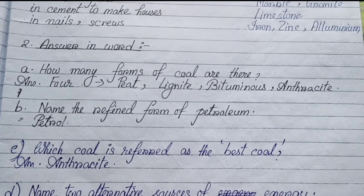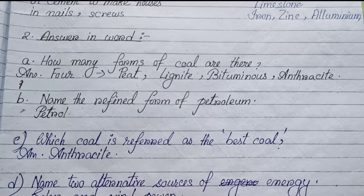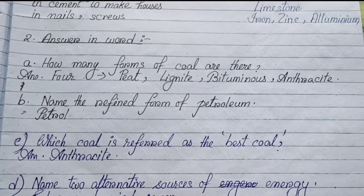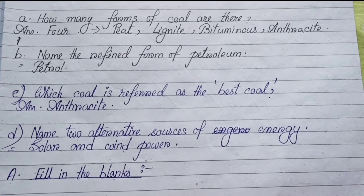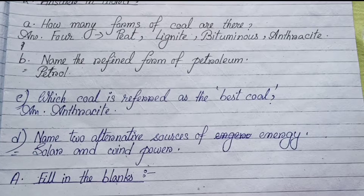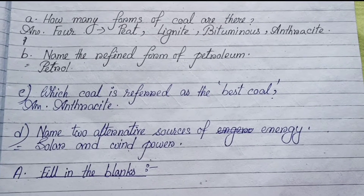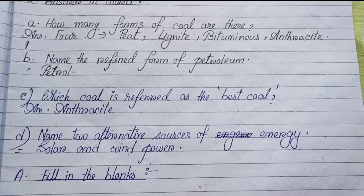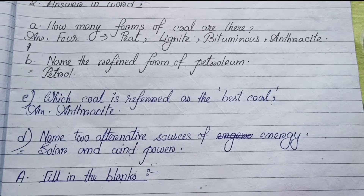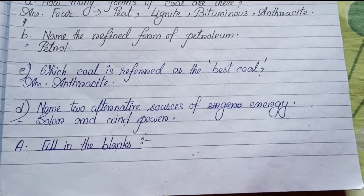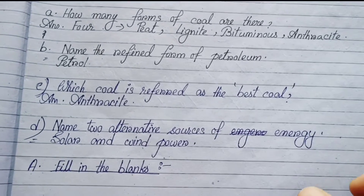(b) Name the refined form of petroleum — Petrol. (c) Which coal is referred to as the best coal? — Anthracite. (d) Name two alternative sources of energy — Solar and Wind power. Next: Fill in the blanks.